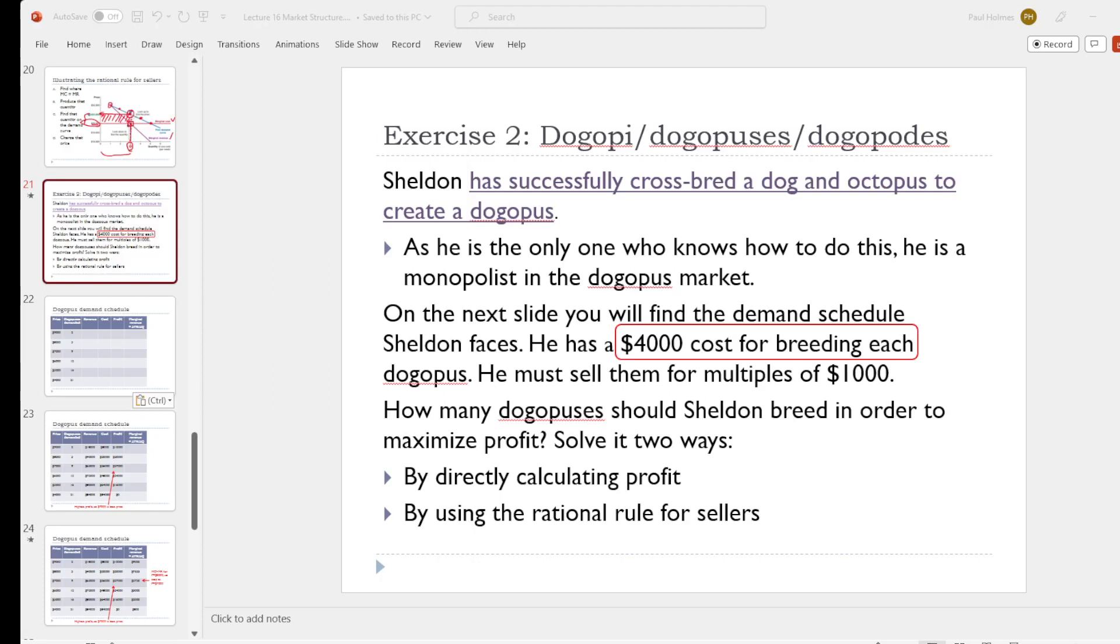For our last exercise we're going to be pretending that we are Sheldon Cooper and we have just invented the Dogopus and we're trying to decide how much money to make.